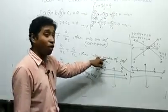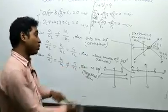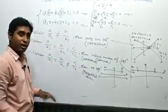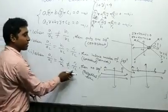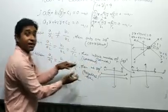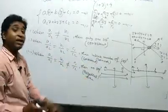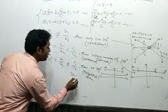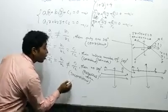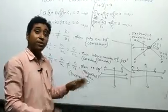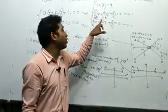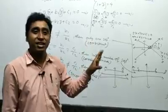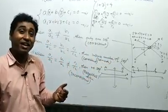When the system has either one solution or infinite solutions, it is consistent. When there is no solution — like the parallel lines case — the system is called inconsistent.